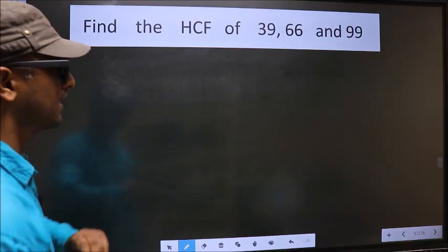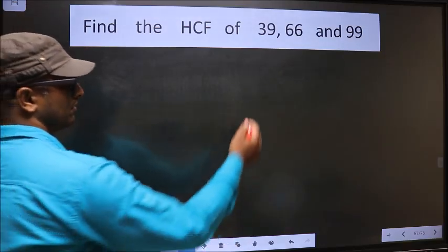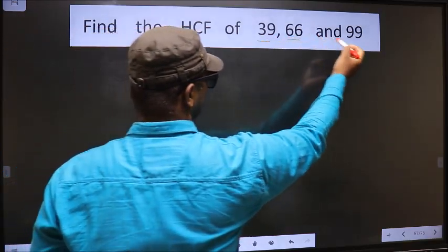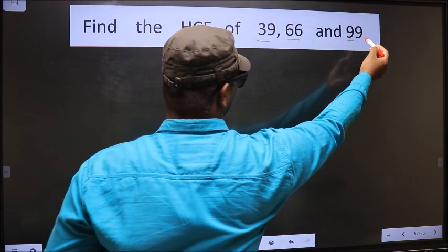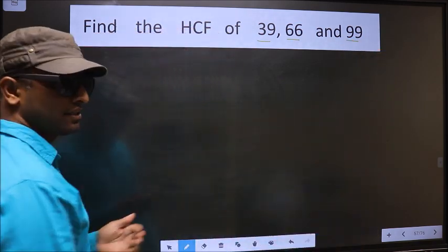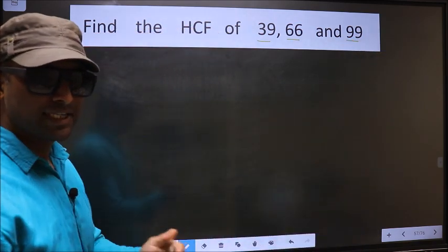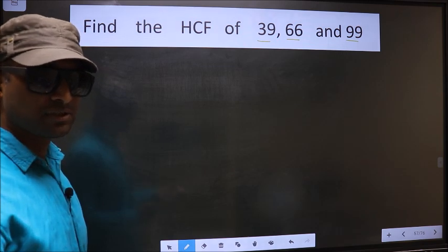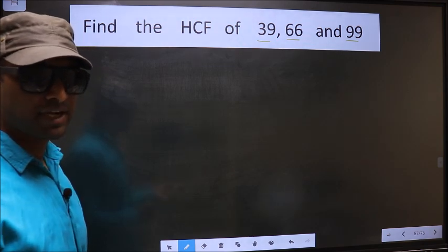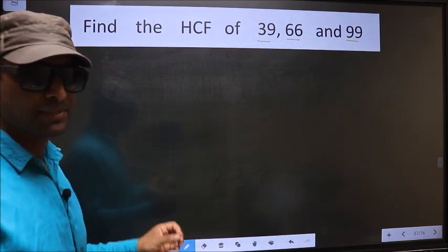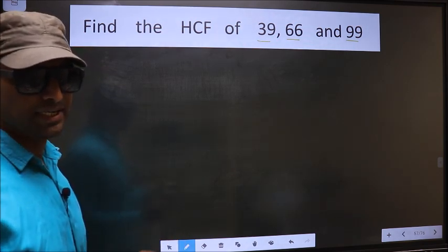Find the HCF of 39, 66, and 99. To find the HCF, first we should do the prime factorization of each number separately.